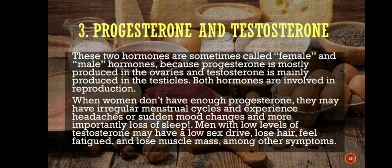Number 3: progesterone and testosterone. These two hormones are sometimes called female and male hormones, because progesterone is mostly produced in the ovaries and testosterone is mainly produced in the testicles. Both hormones are involved in reproduction. When women don't have enough progesterone, they have irregular menstrual cycles and experience headaches, sudden mood changes, and loss of sleep. Men with low levels of testosterone may have a low sex drive, lose hair, feel fatigued, and lose muscle mass, among other symptoms.